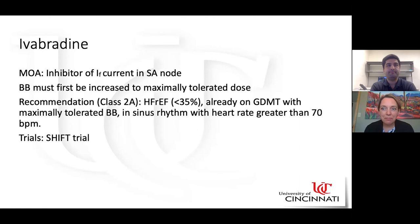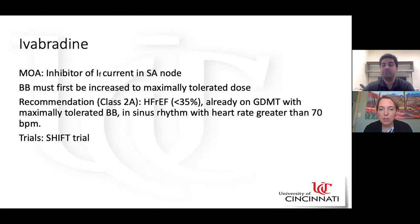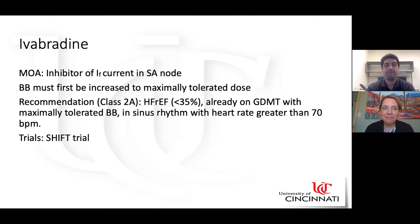Ivabradine is indicated in patients with ejection fraction less than 35% and NYHA class two to four. Patients should be in sinus rhythm, on maximally tolerated doses of beta blocker, with a resting heart rate greater than 70 beats per minute. The SHIFT trial demonstrated significant reduction in hospitalization. It fits a small population of patients who cannot tolerate beta blocker up-titration due to blood pressure but remain tachycardic. Cost can be a significant barrier to use.